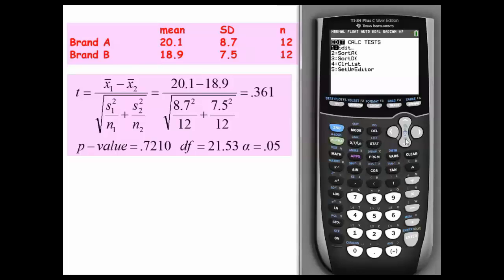We want to do a two-sample t-test. Okay, now the two-sample t-test, because I just did a confidence interval in here, that's why all my numbers are in there, but we would input the mean and standard deviation and sample size for each sample, so 20.1, 8.7, 12 for the first sample, and then 18.9, 7.5, and 12 for the second.